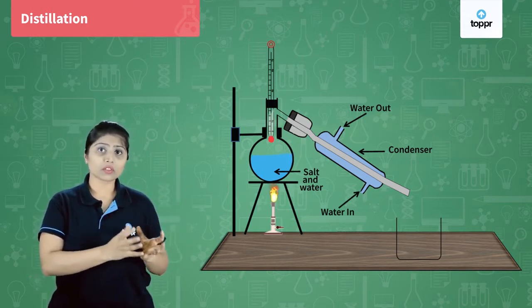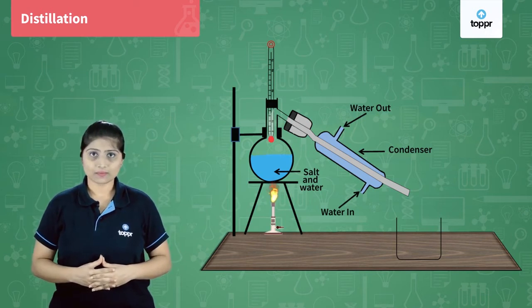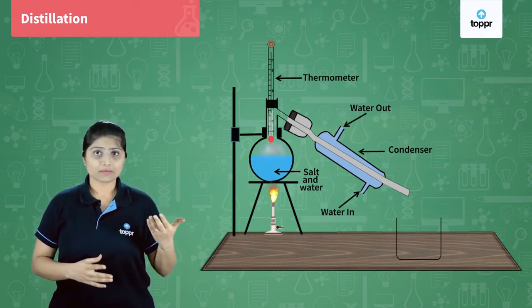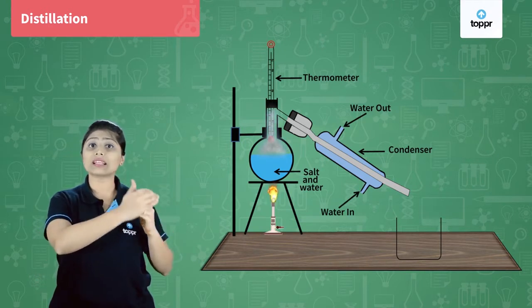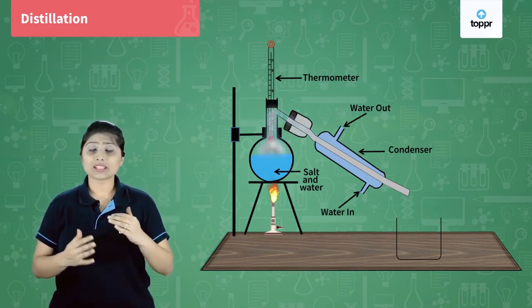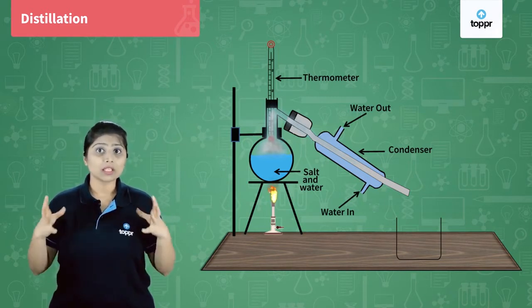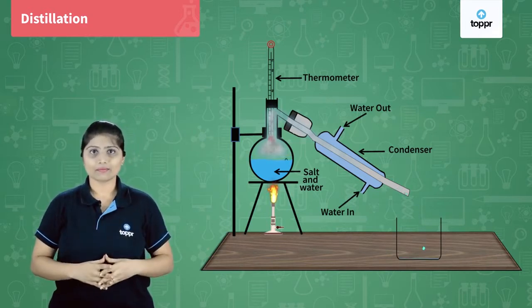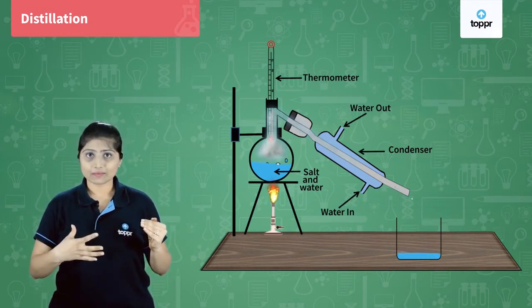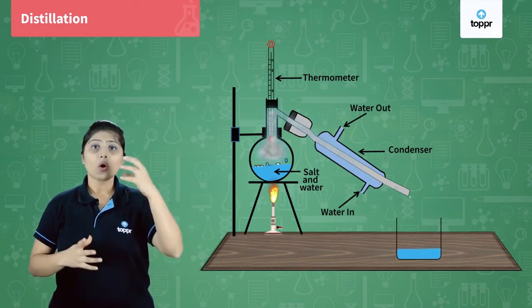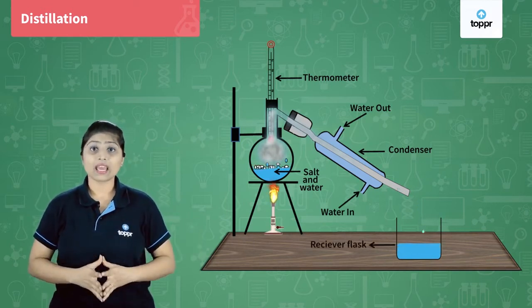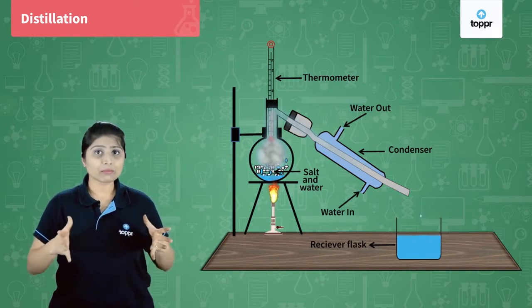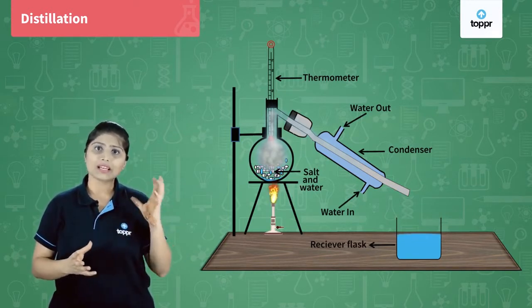Now let us heat the mixture of salt and water which we have taken in the distillation flask. Once the temperature rises and reaches 100 degrees Celsius, evaporation of water starts. The water gets evaporated and moves to the condenser tube, where the temperature is extremely low. When the water vapors move through the inner tube, they start condensing — that means they come back to the liquid state and form water droplets. All these water droplets are collected in an appropriate vessel, and the salt is left behind in the distillation flask.